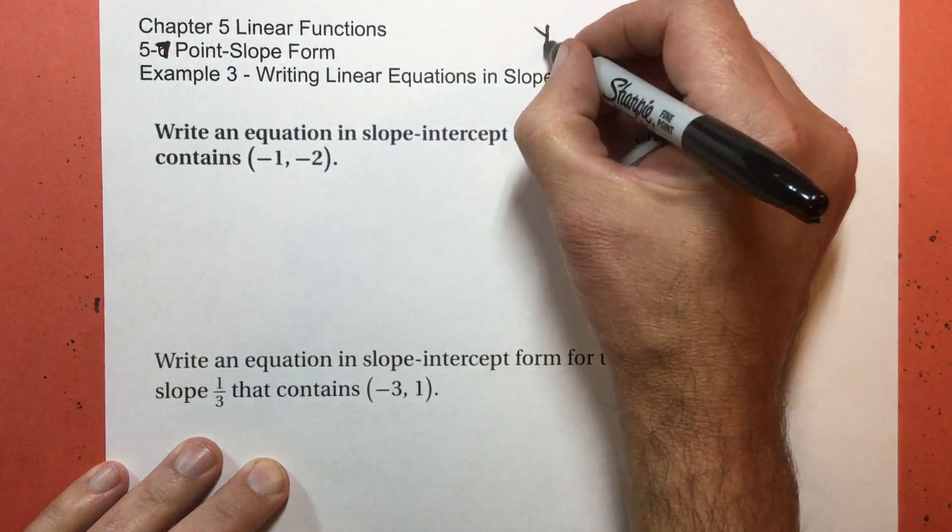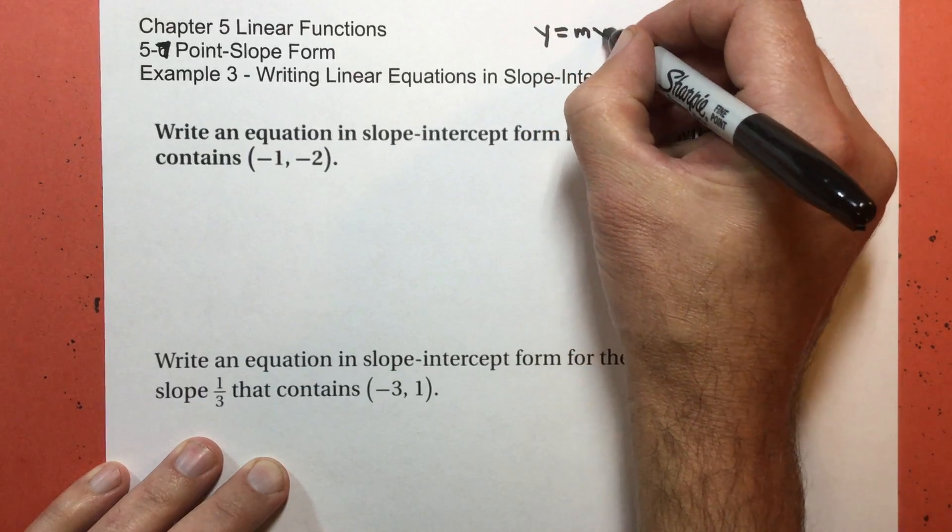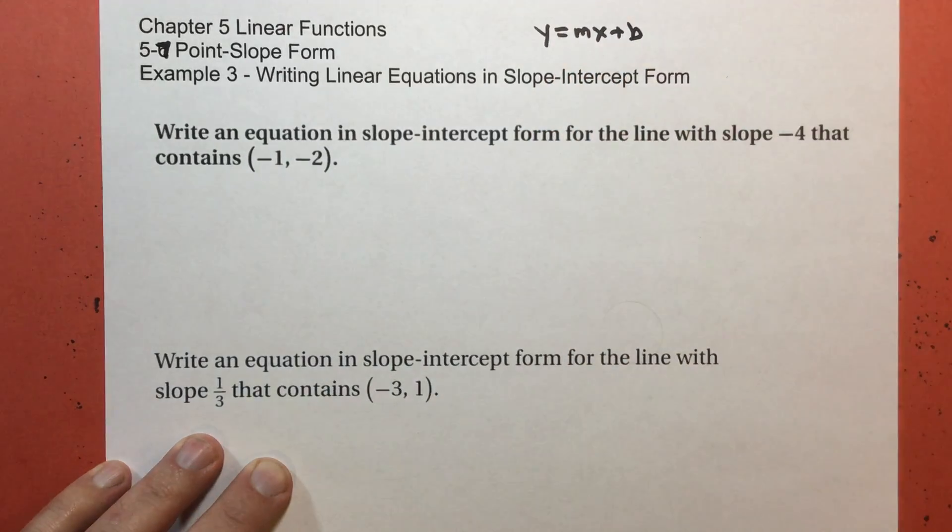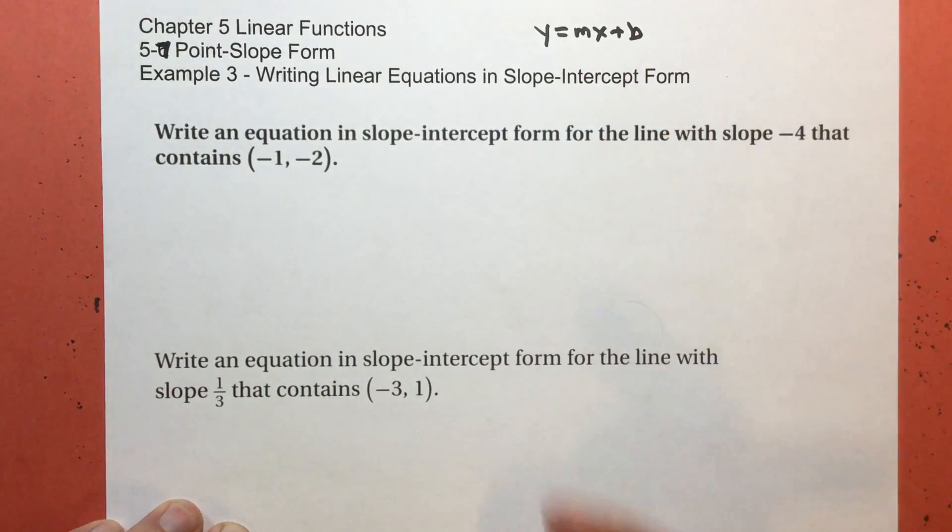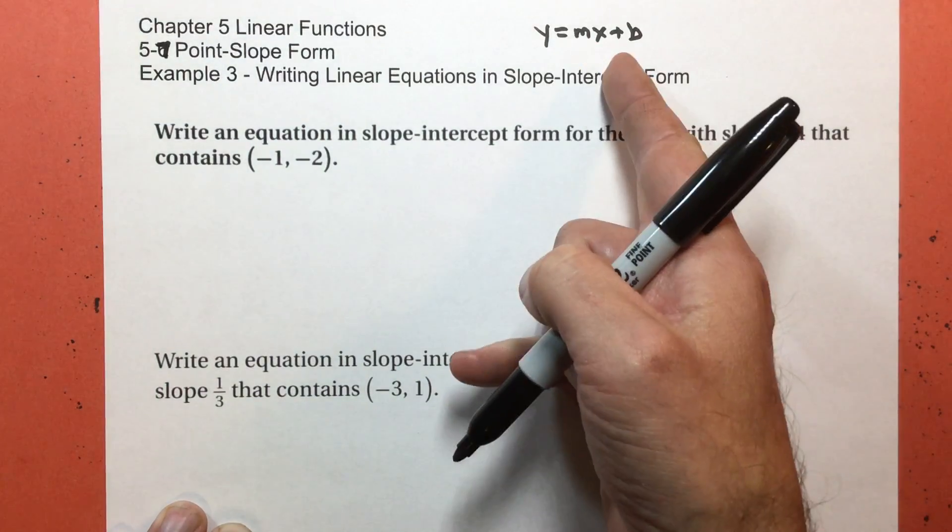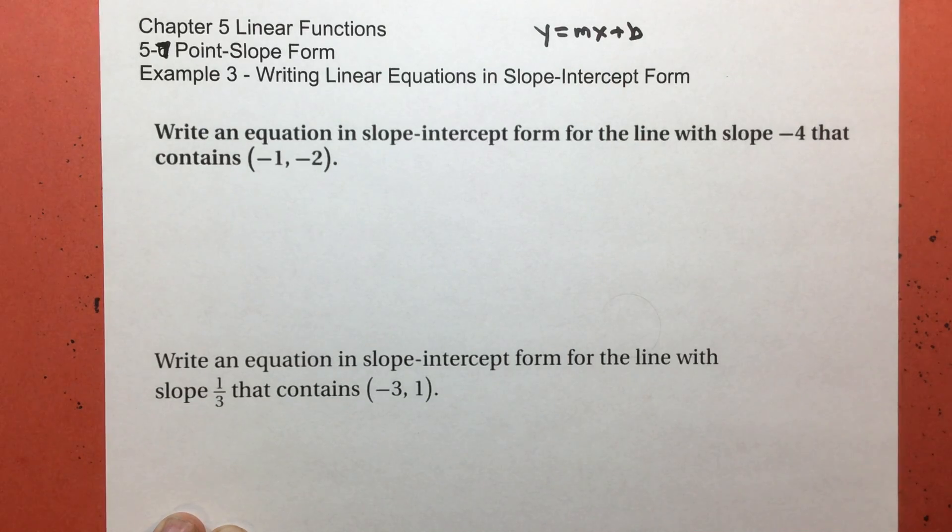And remember, slope intercept form is y equals mx plus b. We're going to start with point slope form and then move it into that, which basically means we're going to simplify it and solve for y. Actually, in the other order, we're going to solve for y and simplify it.